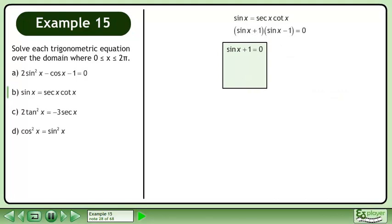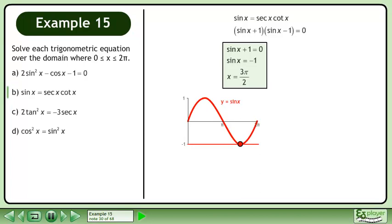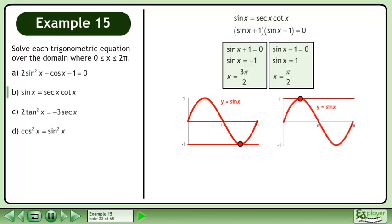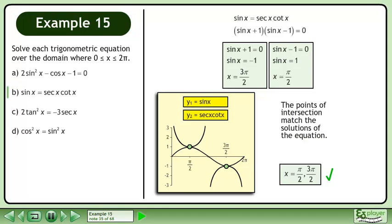Solve sinx plus 1 equals 0. Isolate sinx. The solution is x equals 3pi over 2. Now solve sinx minus 1 equals 0. Isolate sinx. The solution is x equals pi over 2. Combining the solutions, we have x equals pi over 2 and 3pi over 2. The points of intersection match the solutions of the equation.